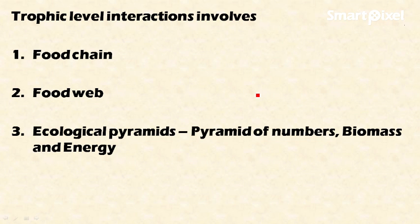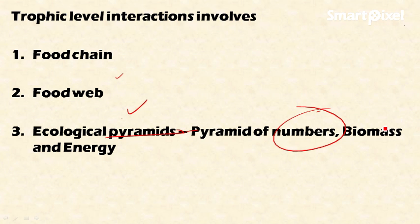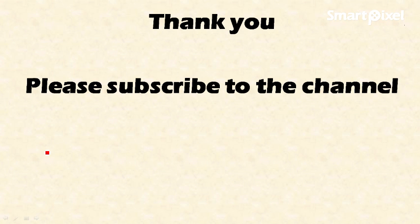There are three important trophic level interactions — food chain, food web, and ecological pyramids. Ecological pyramids are further divided into types based on numbers, biomass, and energy. This covers the functions of the ecosystem; in our next video we will discuss food chain and food web in detail.